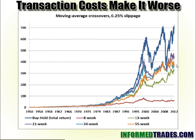Now if you add in just a small transaction cost — a quarter percent slippage factored into commissions, spreads, and things like that — you get a very different picture. Remember those shorter timeframes, 13 week and 21 week, are going to result in more transactions, which means more transaction costs. Here is the blue line, the buy-and-hold, and it clearly outperforms everything else. And the eight week, which is the most active, doesn't do anything at all.